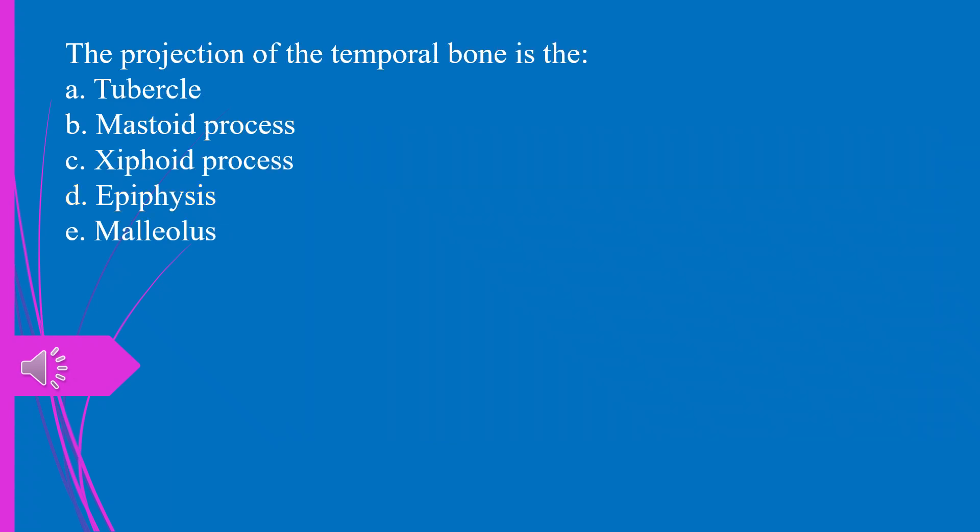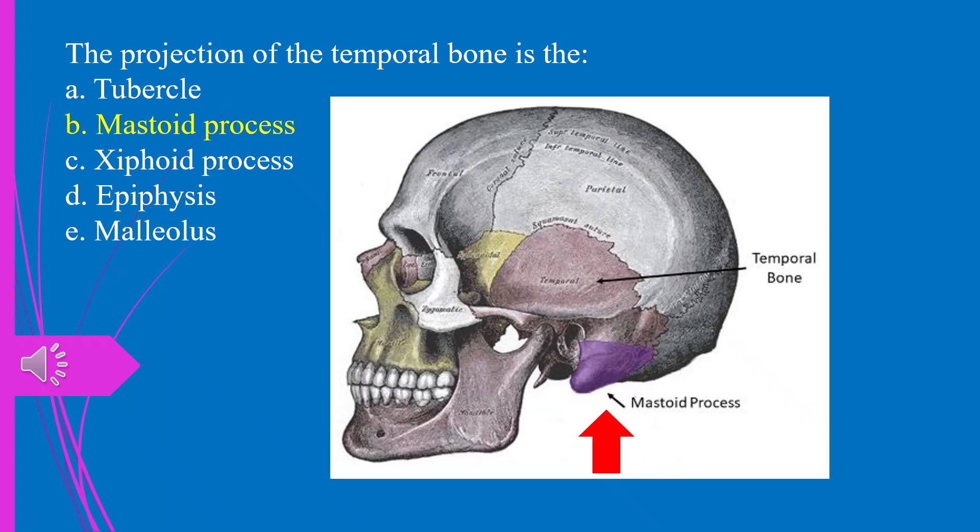Question 39. The projection of the temporal bone is the: a) tubercle, b) mastoid process, c) xiphoid process, d) epiphysis, e) malleus. The answer is b, mastoid process.